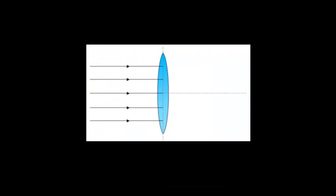The focal length of a lens is the distance from the optical center of the lens to the principal focus.